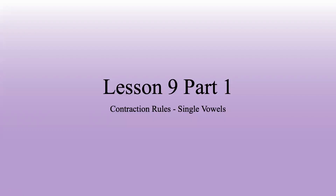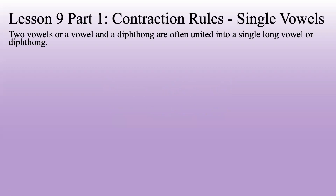Lesson 9, Part 1: Contraction Rules for Single Vowels. Two vowels, or a vowel and a diphthong, are often united into a single long vowel or diphthong. This process is called contraction.